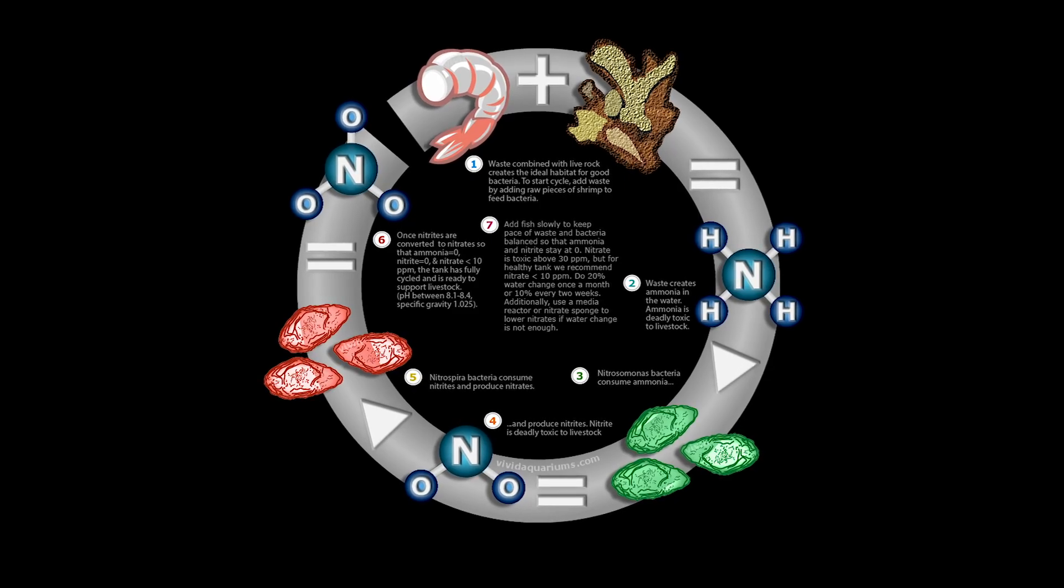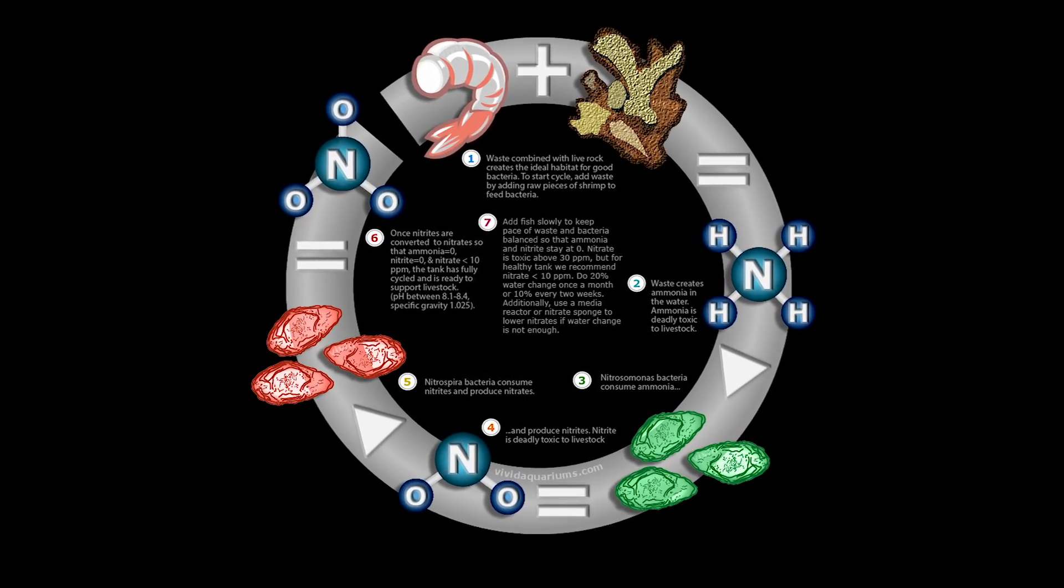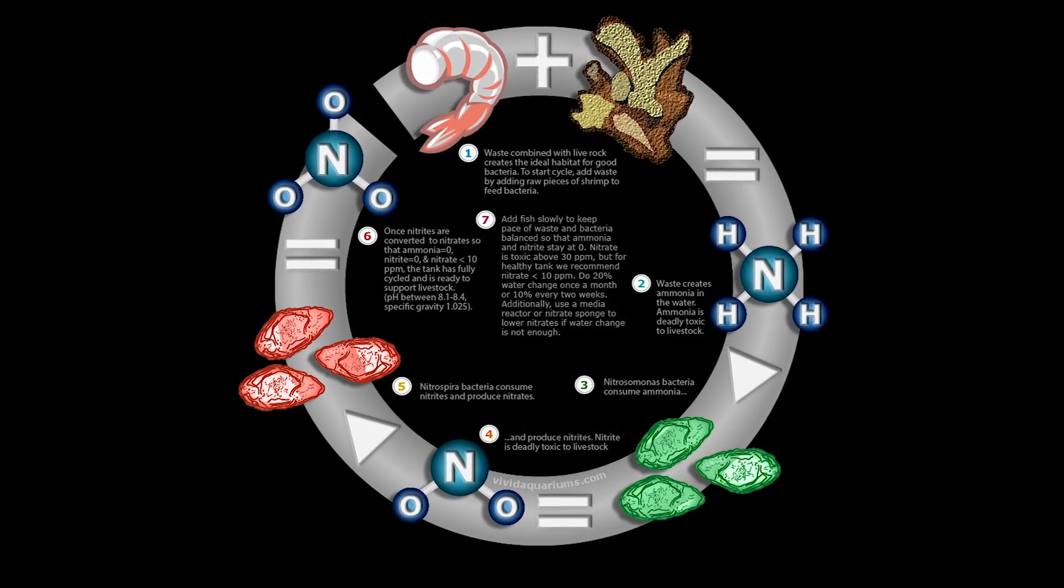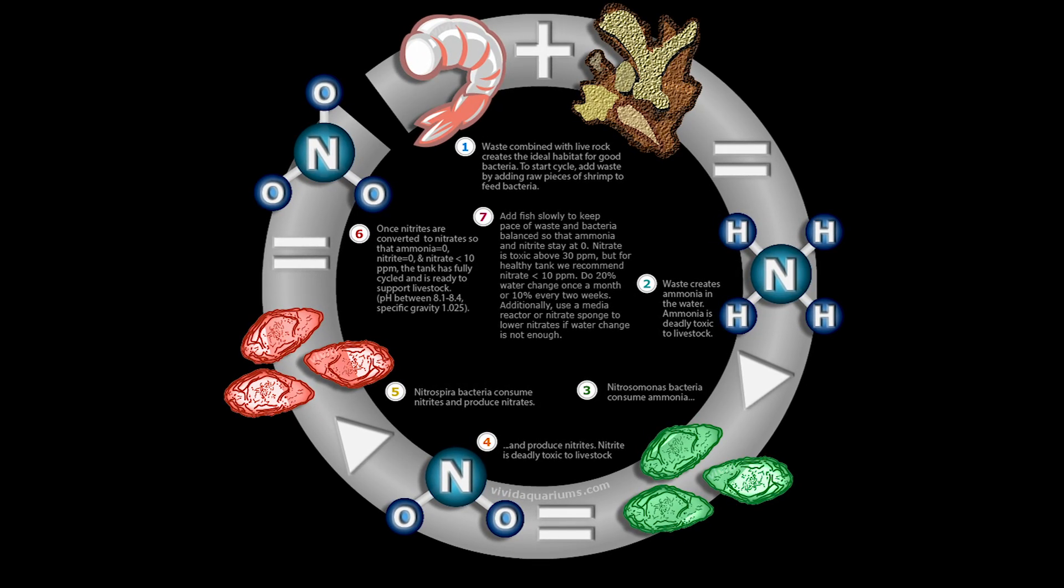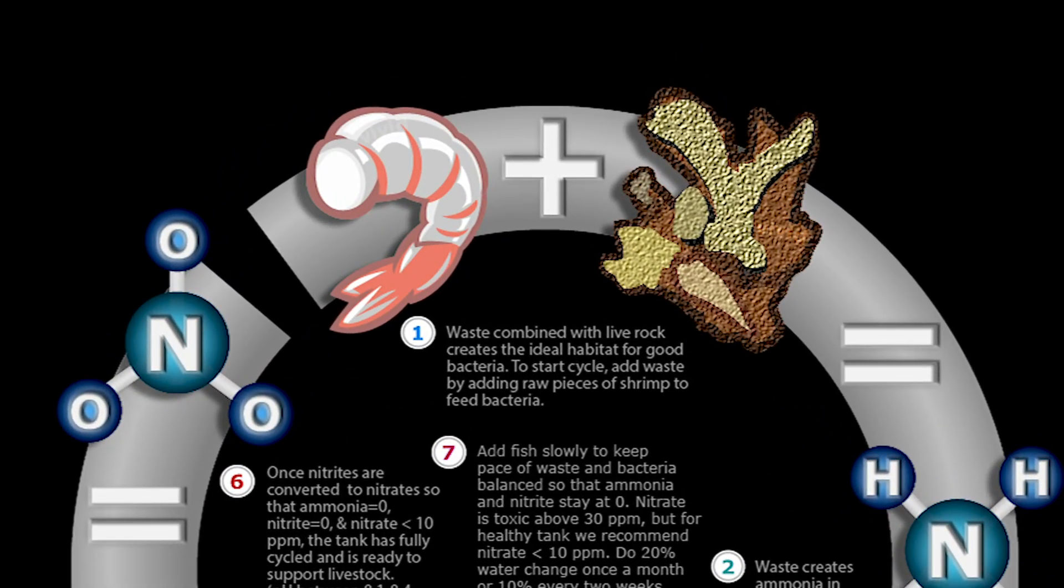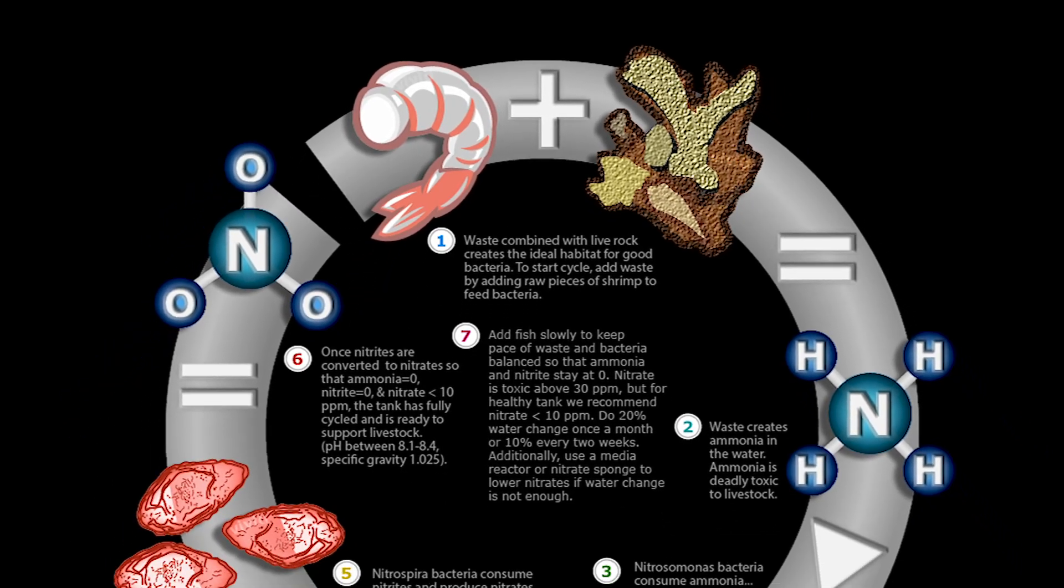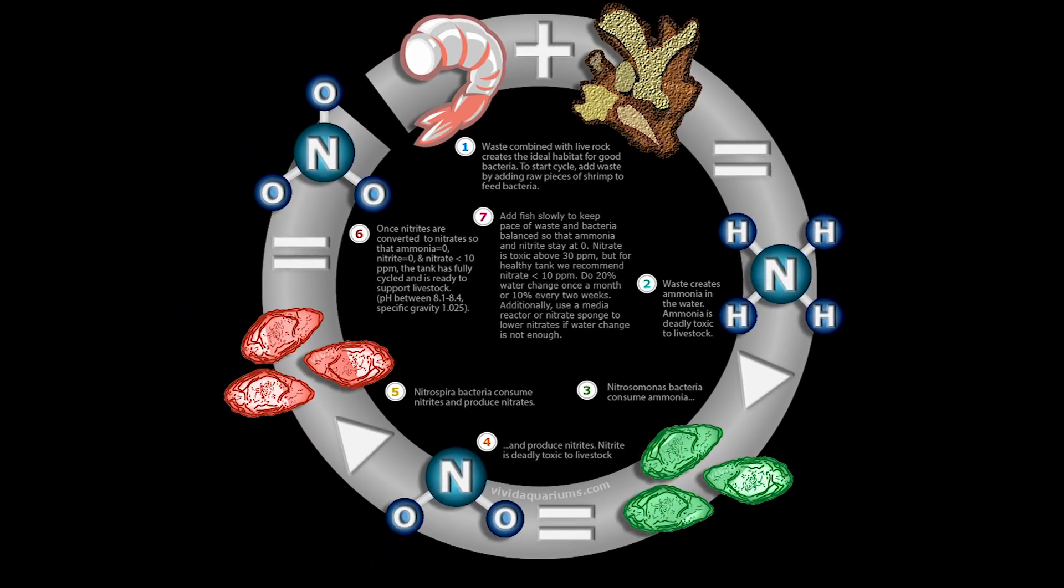So I found this picture on vividaquariums.com, and it explains this nitrogen cycle really well, and I'm going to use it so that it can help you follow along as well. So starting with number one, waste combined with live rock creates ideal habitat for good bacteria. Yes, it is. This is the start. This is where your ammonia will come into play.